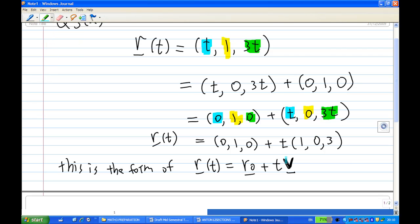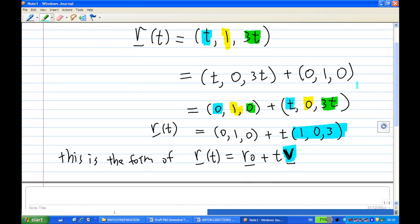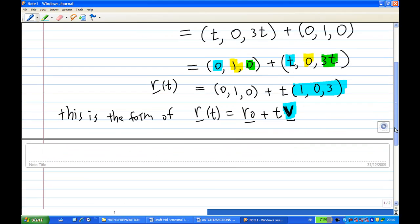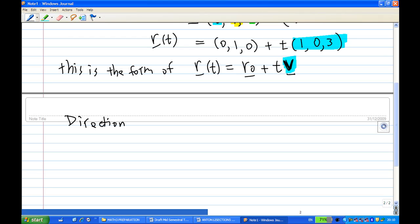Comparing the direction, we know that V is (1, 0, 3). So the direction of line L is V = (1, 0, 3), or we can say i + 0j + 3k, or i + 3k.